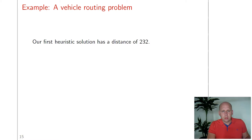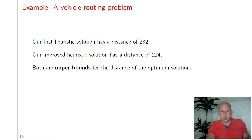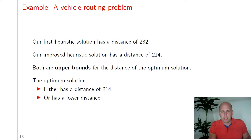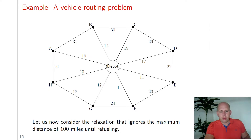Using the heuristics, our first heuristic gave a distance of 232, and the second gives a tour of length 214. Both are upper bounds, meaning the optimal solution is either at the upper bound or has a lower value. Our best upper bound so far is 214, so the optimal solution either has a distance of 214 or lower. This is how a heuristic relates to an upper bound — we talk about upper bounds because it's a minimization problem.